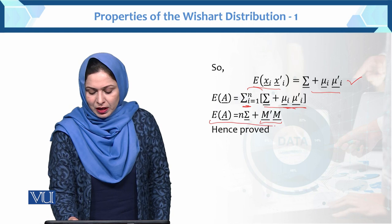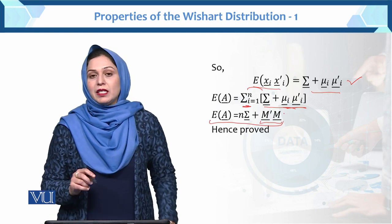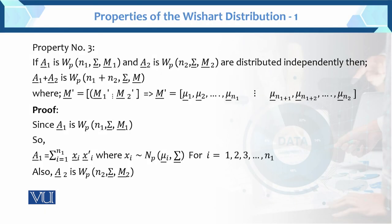So we have proved the second property. This is the central Wishart property. Now here is Property Number 3. If A1 is Wishart with n1, sigma, M1 — which is the non-central Wishart — and the total A is partitioned into two parts: first part up to n1, second part n2, distributed independently, then A1 plus A2 is also Wishart with n1+n2, sigma, M where M equals M1 combined with M2.